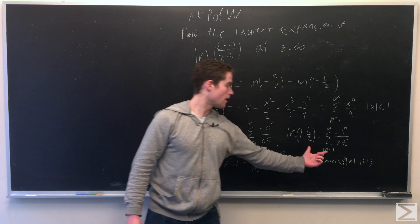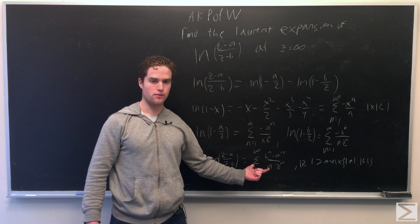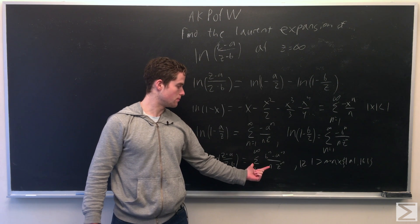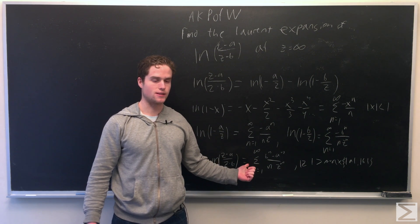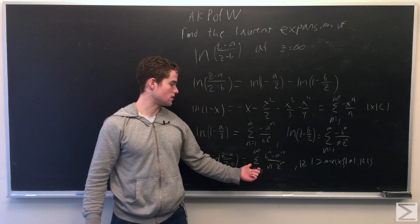And we do a similar thing with this. And if we put these two together, we get our final sum, which is n going from 1 to infinity, b to the n minus a to the n over n times z to the n.